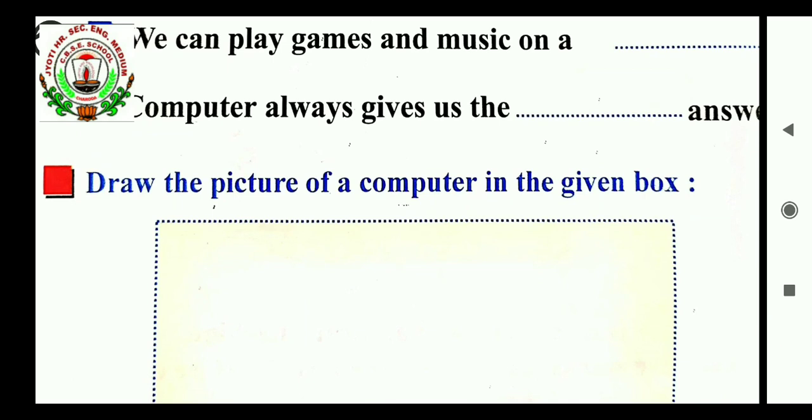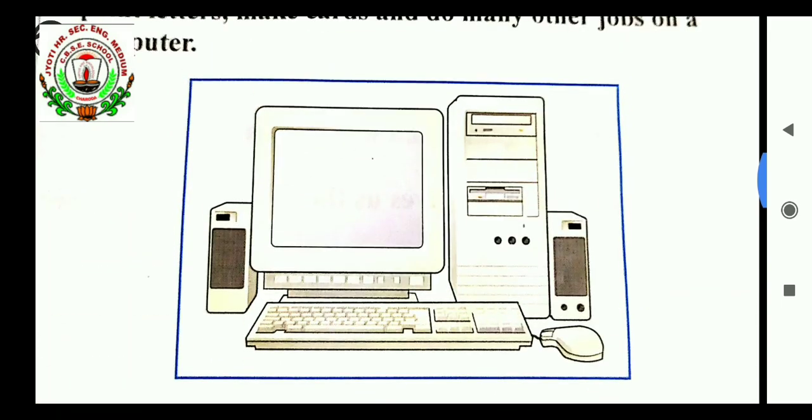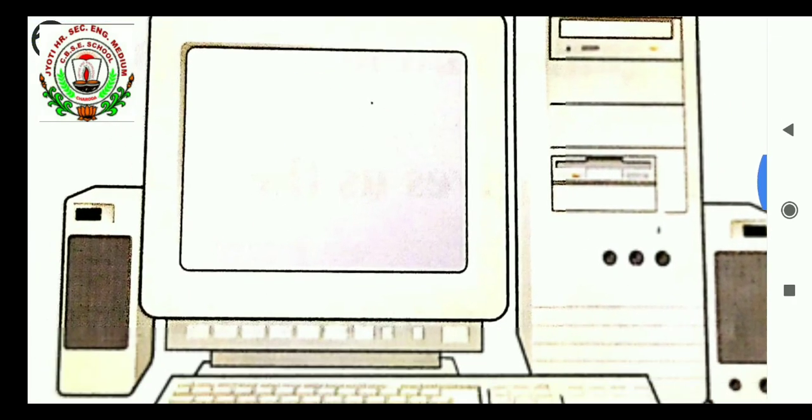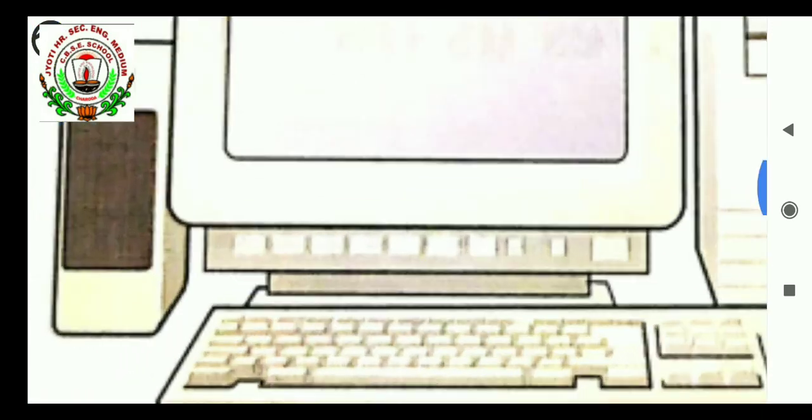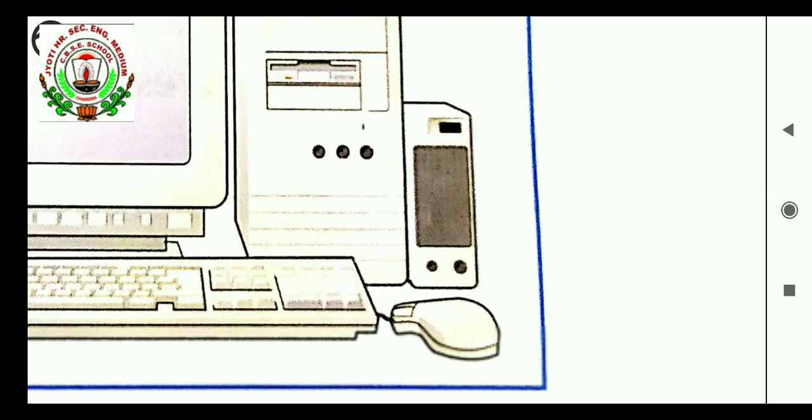The next question is, draw the picture of computer in a given box. So, you will draw computer's pictures given in your book. This picture, computer. In computer, monitor. This one is monitor. Then, keyboard. Then, this is CPU. This one. And, this two are speaker. And, this is mouse. You will draw the picture in your book.